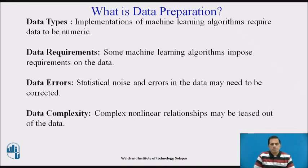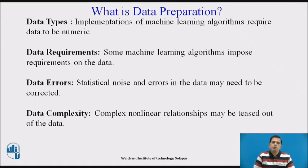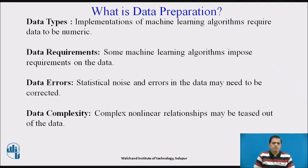Next, consider what data preparation involves. While preparing the data, we should check data types, data requirements, data errors, and data complexity. Implementation of machine learning algorithms requires data to be numeric — that is data types. Some algorithms impose requirements on the data — that is data requirements. Some data have statistical noise and errors that need to be corrected before transforming. And some complex non-linear relationships may arise from the data, which falls under data complexity.